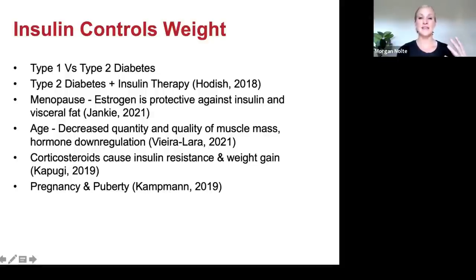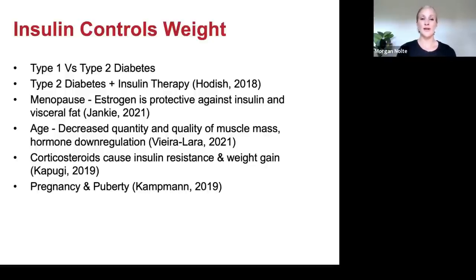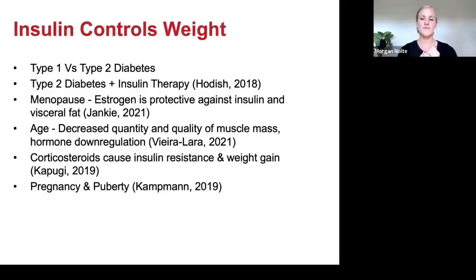With age, there's reduced quantity and quality of muscle mass — sarcopenia — though there's a lot we can do to mitigate that. Muscle is like a garage for your glucose; that's where glycogen is stored. When you have less muscle mass, you have fewer insulin receptors and less place to store glucose, so it stays elevated in your blood and you need more insulin. Also with age, you'll have less testosterone and less human growth hormone, which can lead to poorer muscle quality, a harder time building muscle, and a reduced metabolic rate.